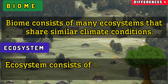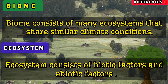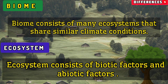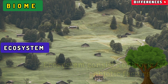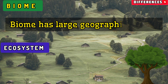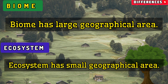Ecosystem consists of biotic factors and abiotic factors. Biome has a large geographical area, while ecosystem has a small geographical area.